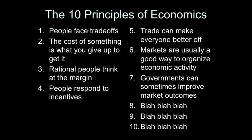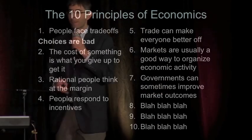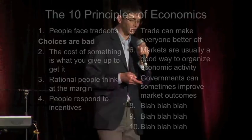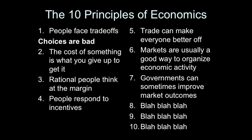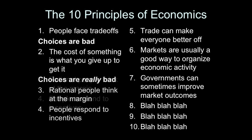Let's go back to the micro principles now. The first one: people face trade-offs. This one is easy. Translation: choices are bad. This is a simple syllogism — trade-offs are bad. Anytime you have choices, you have trade-offs. Therefore, choices have to be bad. If you don't understand that, take a look at principle number two: the cost of something is what you give up to get it. Translation: choices are really bad.